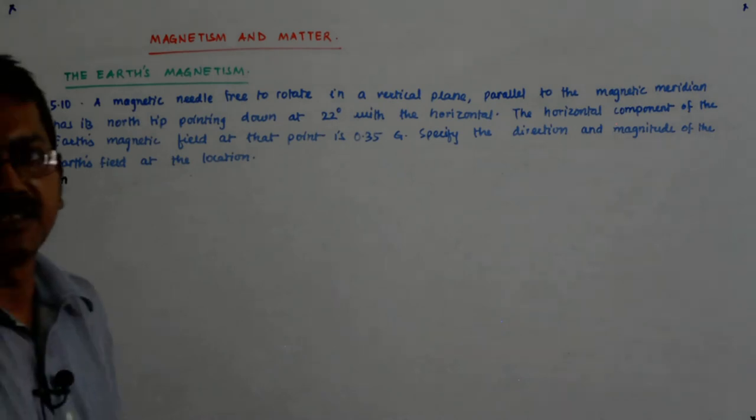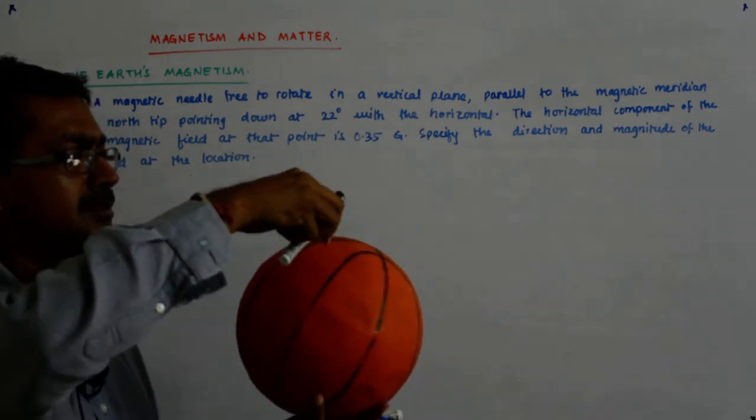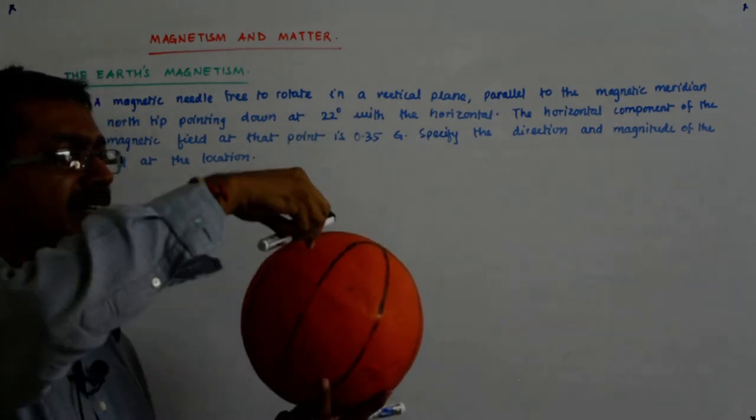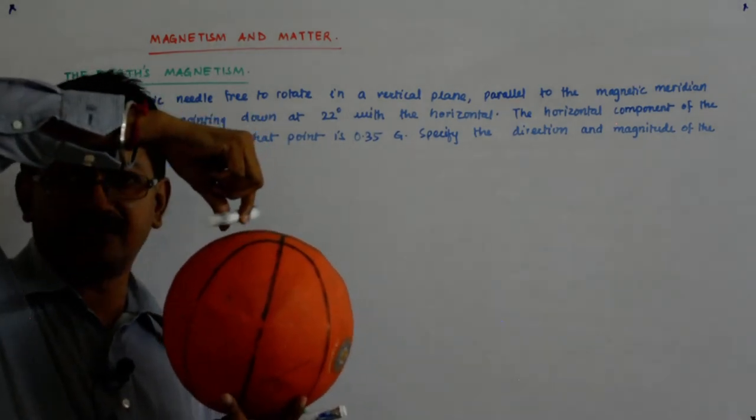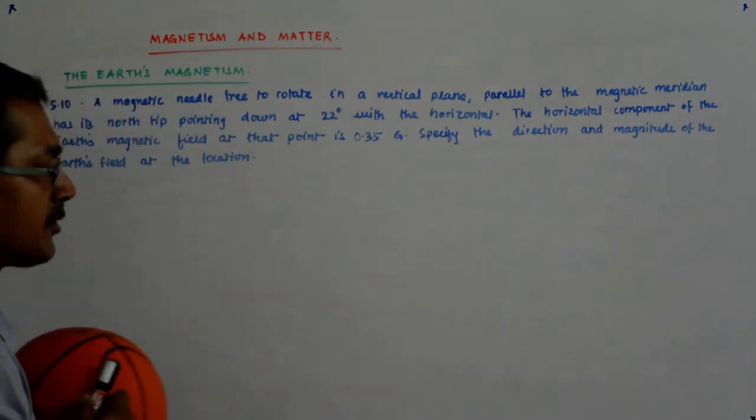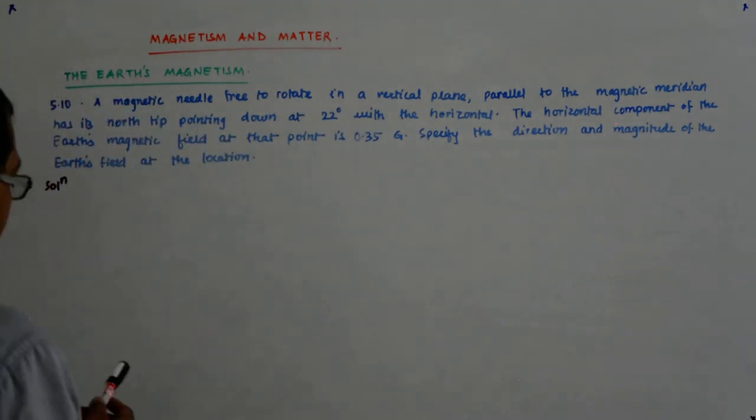That means there is a magnetic needle which can rotate in a vertical plane. We have our magnetic needles which rotate like that which is the horizontal plane. So it is a modified magnetic needle.